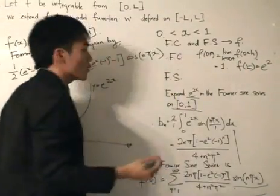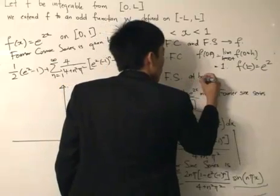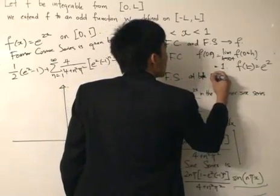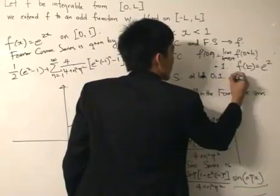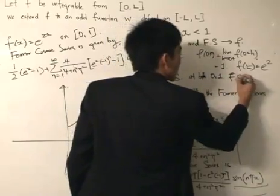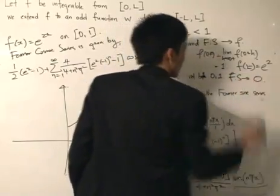But what about the Fourier sine series? Well, I just told you at both 0 and 1, the Fourier sine series is going to converge towards 0.